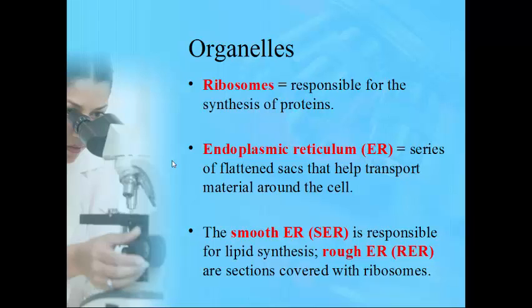Ribosomes are responsible for the synthesis of proteins — this is how proteins are made. The next organelle is the ER, short for endoplasmic reticulum. This is a series of flattened sacks that help move material around the cell. There are two types: smooth ER, which is responsible for making lipids, and rough ER, which are sections covered with ribosomes.